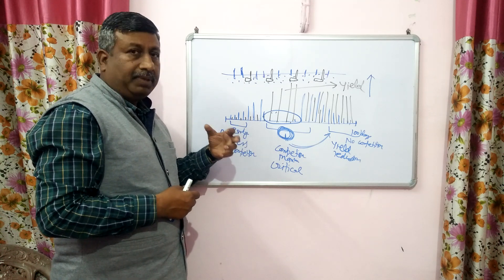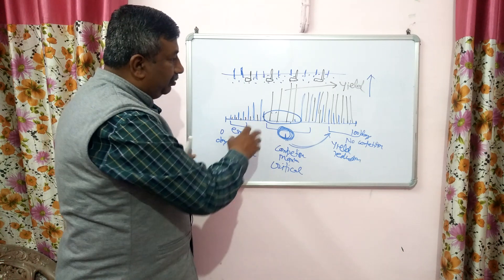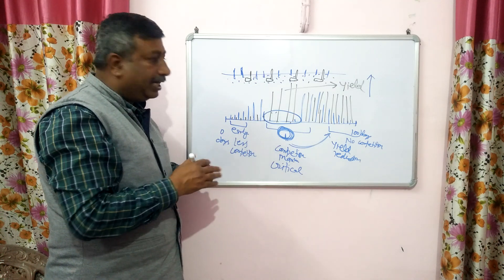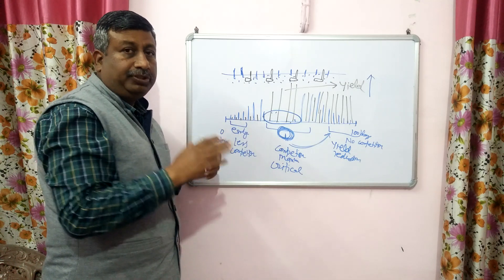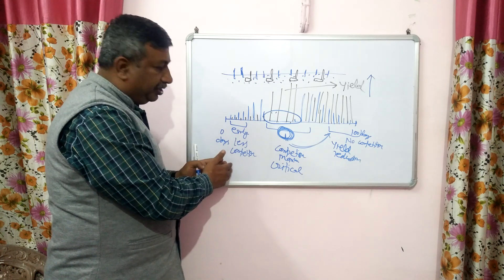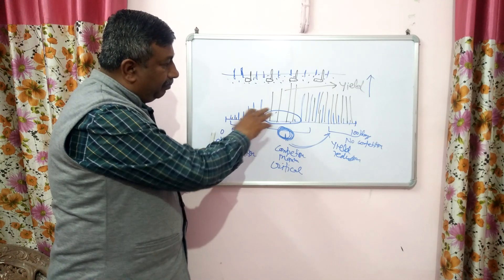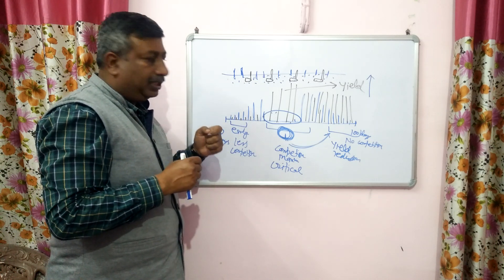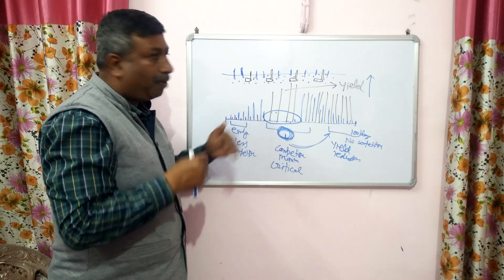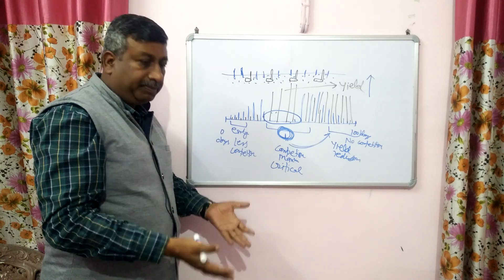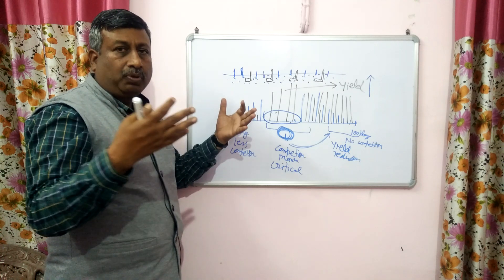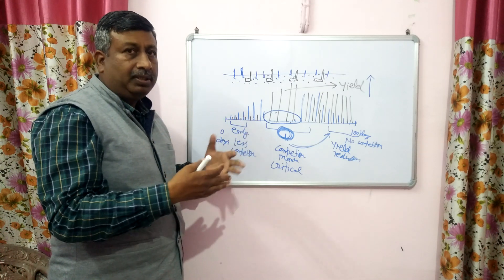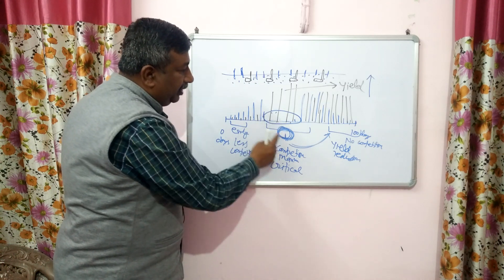If weeds are removed during this critical middle period, the crop will exert its full potential — more root growth means more nutrient absorption, more moisture absorption, more leaf growth, more photosynthesis, more flowering, more pods, more grains, more ear length, more cob, more tillering. So this period is the critical period.